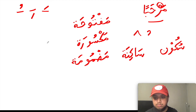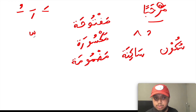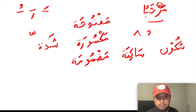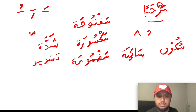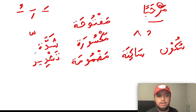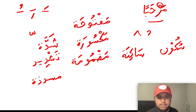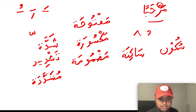One other diacritical mark worth noting is this little W-type sign, known as a shadda — also sometimes known as tashdeed. A letter with a shadda on it is known as mushadda.